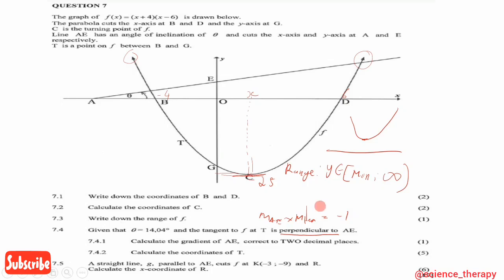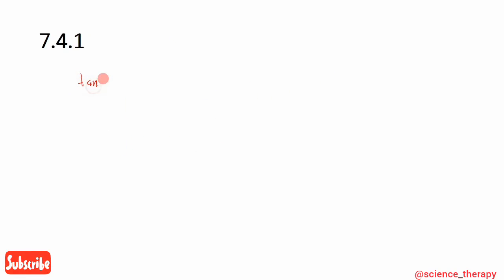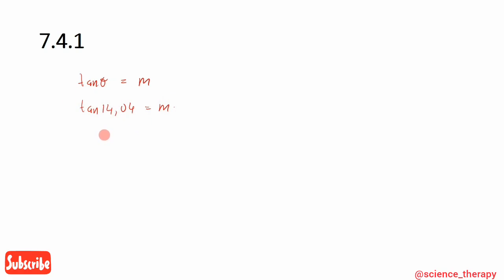We've been given theta = 14.04 degrees. Using the angle of inclination formula tan(theta) = m, we calculate the gradient of AE: m = tan(14.04°) ≈ 0.25. So the gradient of AE is 0.25.